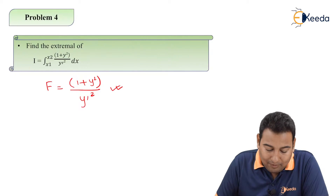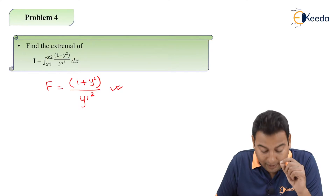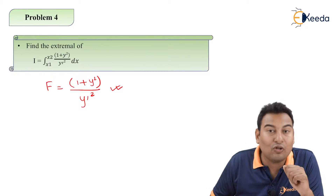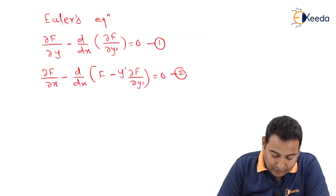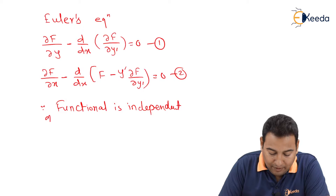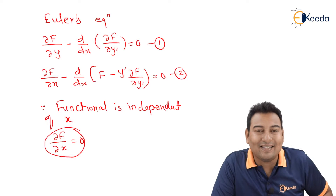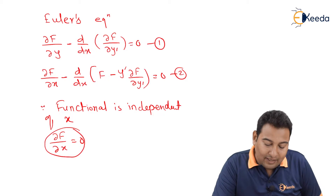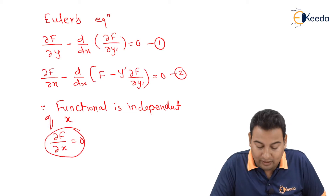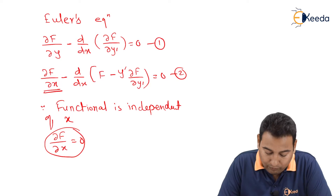This problem is independent of x — we have y and y', but no explicit x. Since the functional is independent of x, ∂f/∂x = 0. Checking both equations, equation two contains this term, so we substitute into equation two.